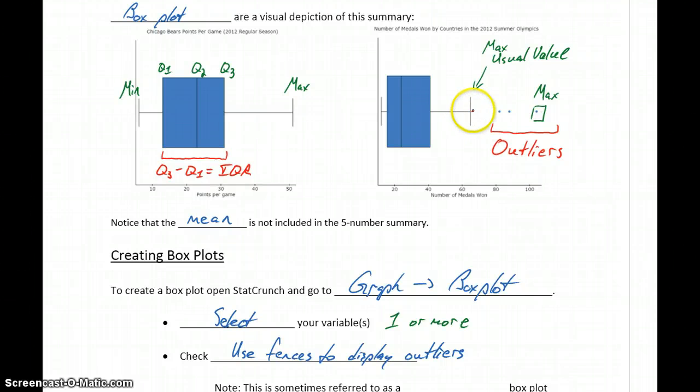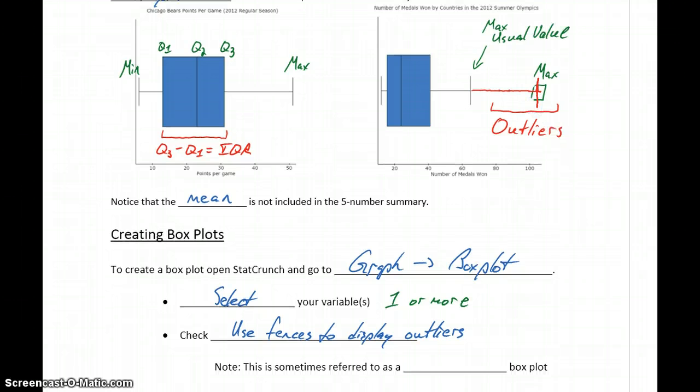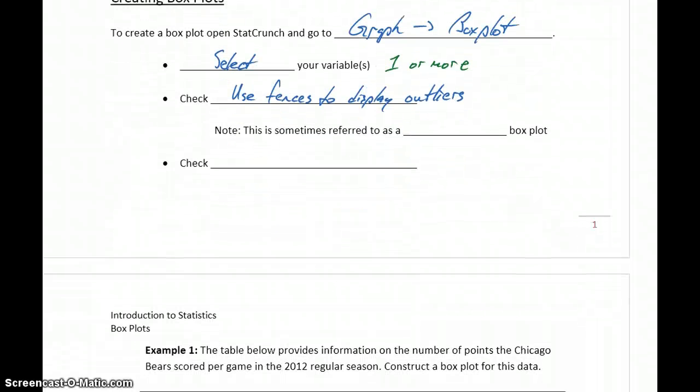If we didn't check that, this line would have extended and this fence would end at that maximum value. So it's an option to use fences to display outliers, but I would recommend doing that.